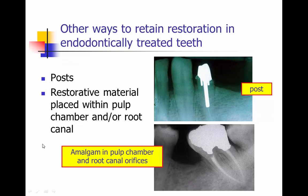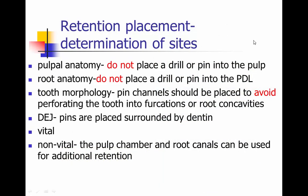Here we're looking at ways to retain restorative materials in endodontically treated teeth. In the upper right-hand photo, we see a tooth with a post and two pins, and an amalgam restoration was placed. In the lower radiograph, we can see that amalgam was actually placed into the root canals themselves and the pulp chamber. If you're using pins, you really need to understand and remember the pulpal anatomy of the tooth. If it's a vital tooth, you don't want to perforate into the pulp chamber.